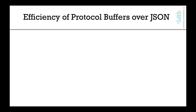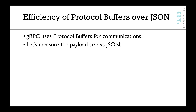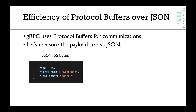Why protocol buffers and why not JSON like we have in REST APIs? Well, gRPC really needs to use protocol buffers for communications, and the reason is because of the payload size. If we look at JSON, for example, and we have a JSON document with age, first name, and last name, this payload — I measured it online — is approximately 55 bytes.